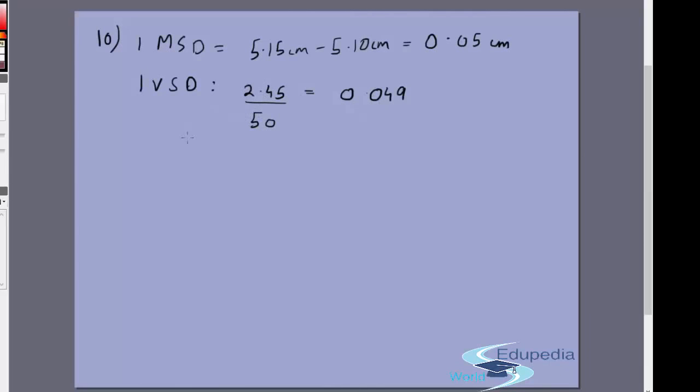What is the least count? The least count of a Vernier caliper is one main scale division minus one Vernier scale division, so that is equal to 0.001.